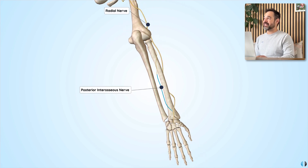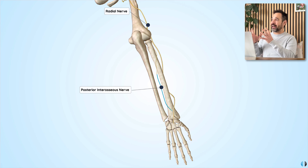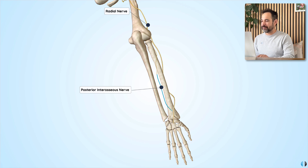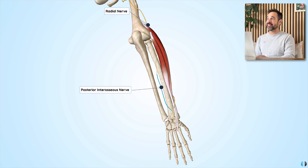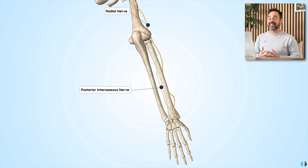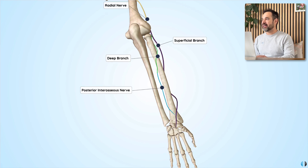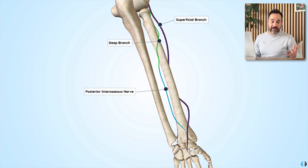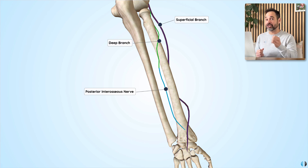To summarize the innervation: out of the muscles we've looked at, only extensor carpi radialis longus and extensor carpi radialis brevis are innervated by the radial nerve directly around the lateral epicondyle. All the others — extensor digitorum, extensor digiti minimi, extensor carpi ulnaris, and so on — are innervated by the posterior interosseous nerve, which is the key branch of the radial nerve.